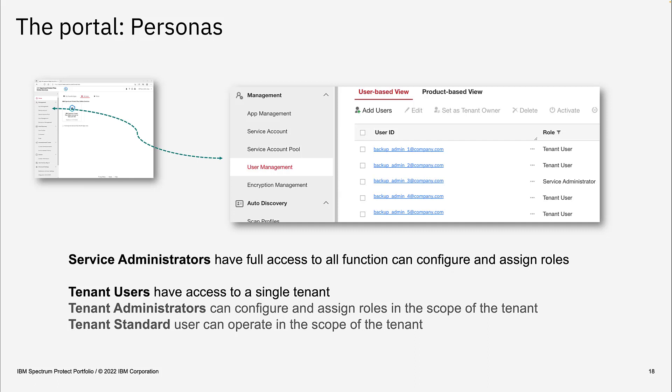The second type of persona is the tenant user. A tenant user has access to a single Microsoft 365 tenant that is assigned, and is split into two levels: the tenant administrator and the tenant standard user. The tenant administrator can manage and configure everything related to the tenant — for example, if the customer brings their own storage, the tenant administrator can configure that storage.